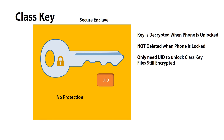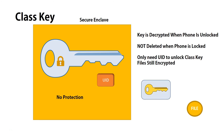The only thing that protects this class key is the UID. A lot of files and user data on the iPhone are only protected with the no protection key. The no protection class key encrypts the file key, which encrypts the file.